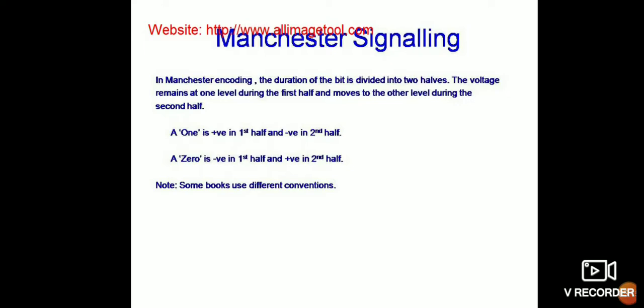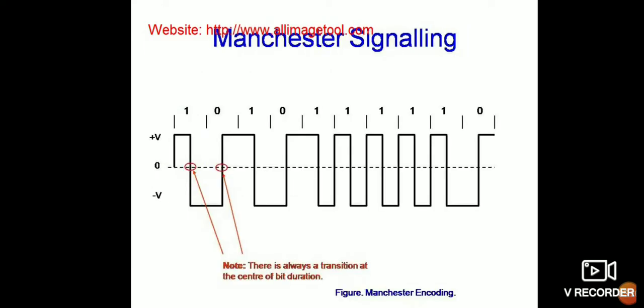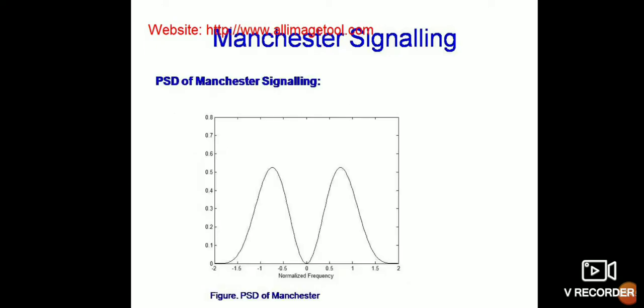Some books use different conventions according to their convenience. The diagram shows the Manchester signal waveform. At each bit duration there is always a transition at the center, either from 1 to 0 or from 0 to 1. This shows the pulse format and the power spectrum density of Manchester signaling.